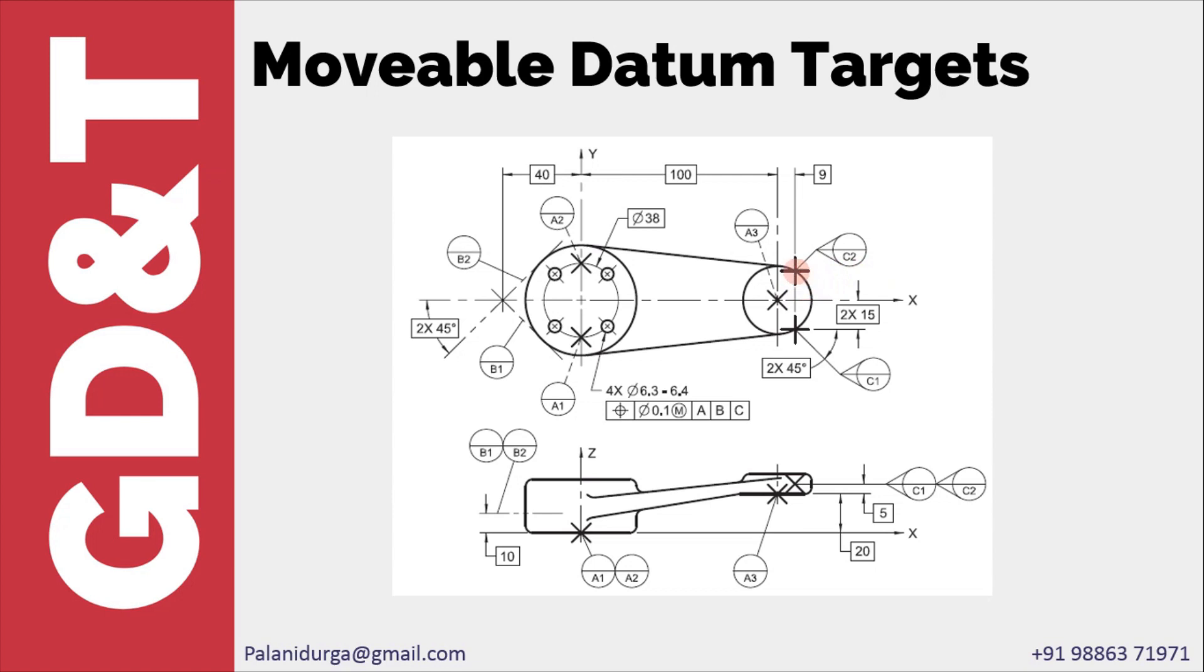Usually when we have cast surface or forged surface, it is not possible for us to get the parts exact to the dimension when they are in raw stage. So in those cases, to accommodate the deviation, we can go with movable datum targets. This is how datum targets are used. Thank you.